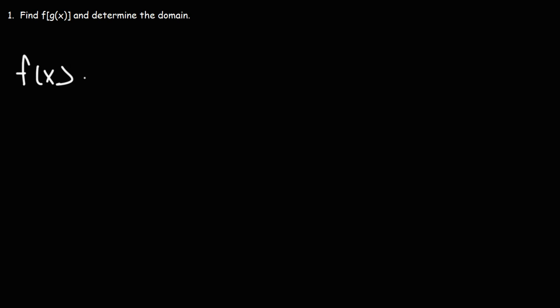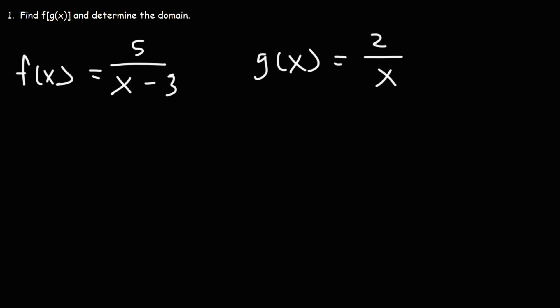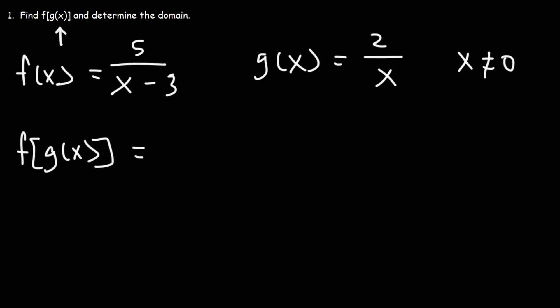For practice, let's try another example. Let's say f of x is 5 over x minus 3 and g of x is 2 over x. First, focus on the inside function g of x — we know x cannot equal 0. Next, let's find f of g of x by putting g inside of f: it's going to be 5 over (2 over x) minus 3. We can see that x cannot be 0 in this fraction.